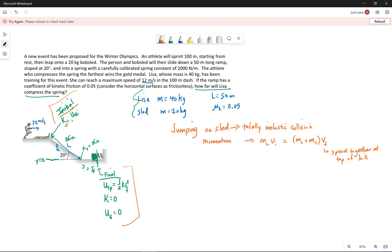Let's go ahead and throw those numbers in. We know Lisa has a mass of 40 kilograms. We're assuming she's reaching her maximum speed of 12 meters per second. 40 plus 20, because her mass plus the sled's mass. Let's see, 40 times 12 is 480, divided by 60. So together, Lisa on the sled are traveling 8 meters per second, the speed at the top of the hill.